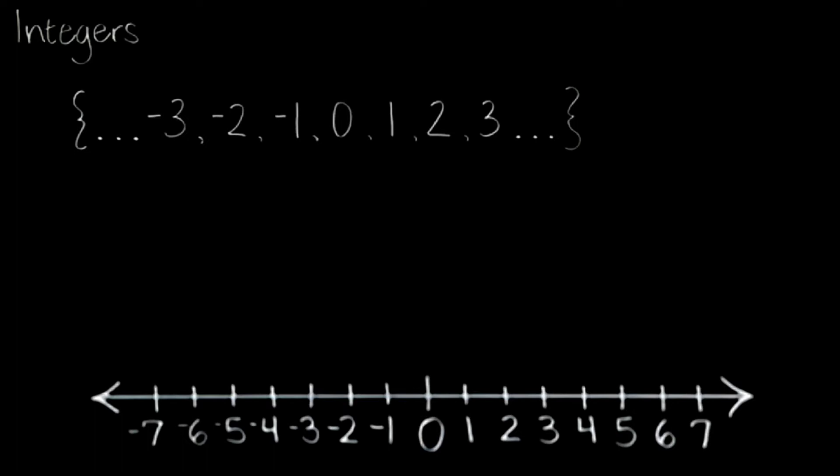Now the set of integers also includes the negative counterparts of your whole numbers. When I say negative counterparts, let me give you an example. For one, its negative counterpart is going to be negative one. For two, its negative counterpart is going to be negative two. For three, its counterpart is going to be negative three, et cetera. So the set of integers includes the negative numbers, zero, and then the positive numbers.